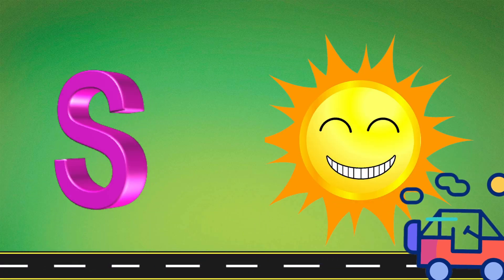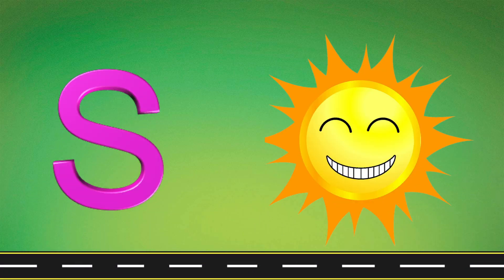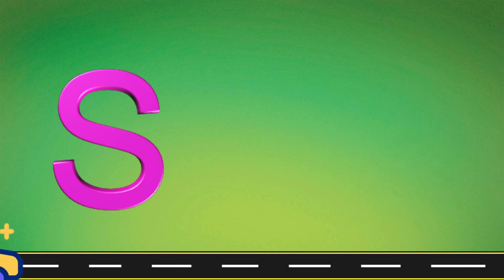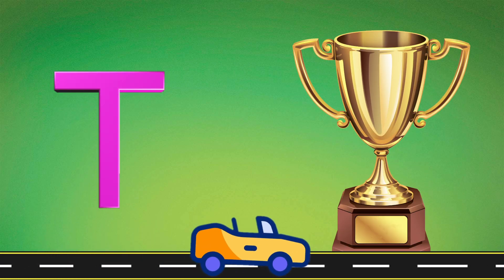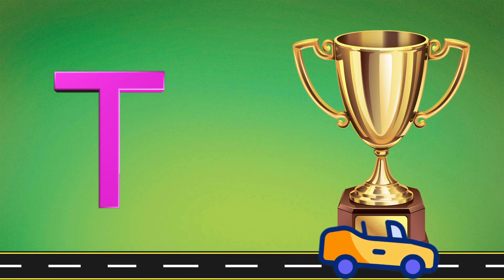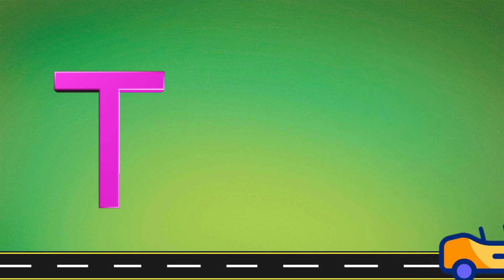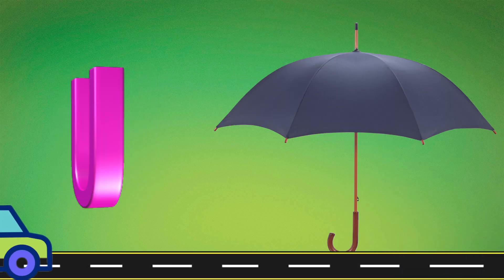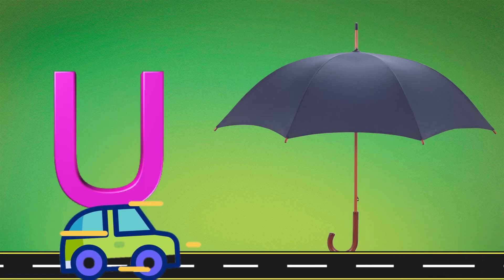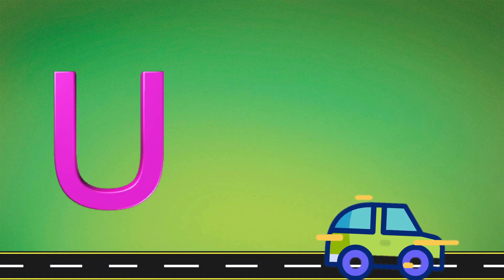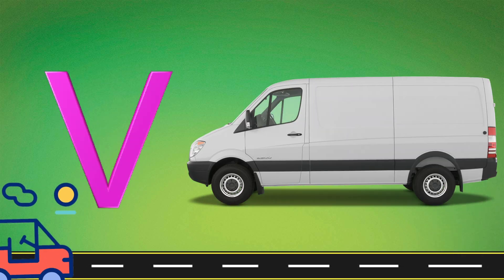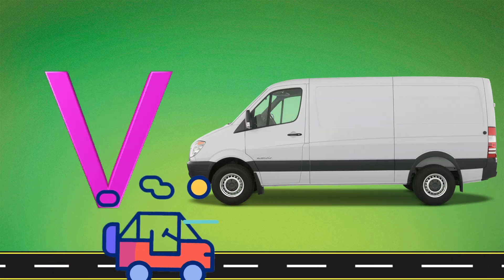S. S is for Sun. T. T is for Trophy. U. U is for Umbrella. V. V is for Van.